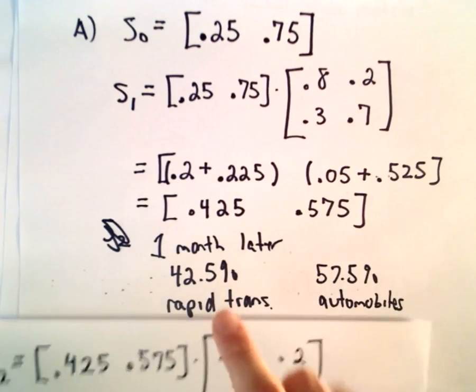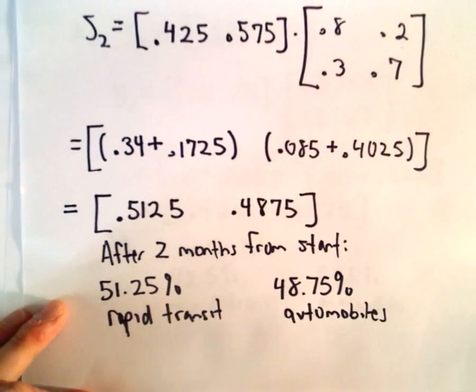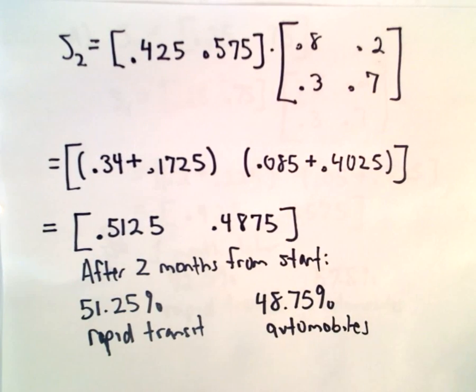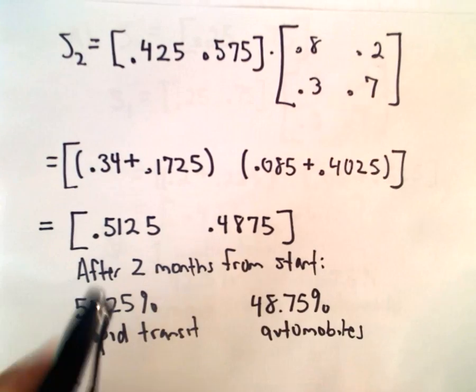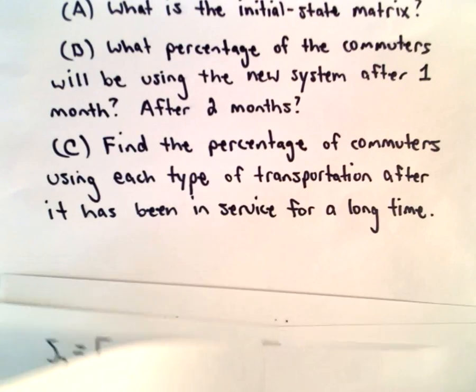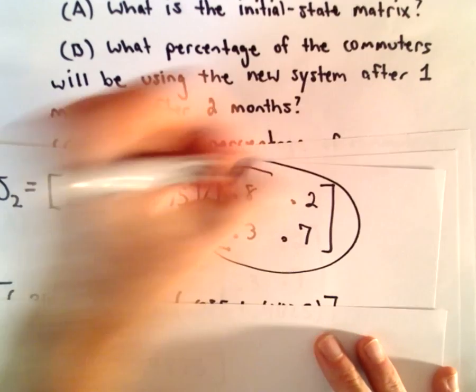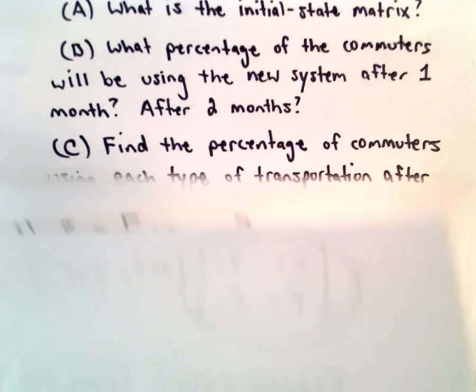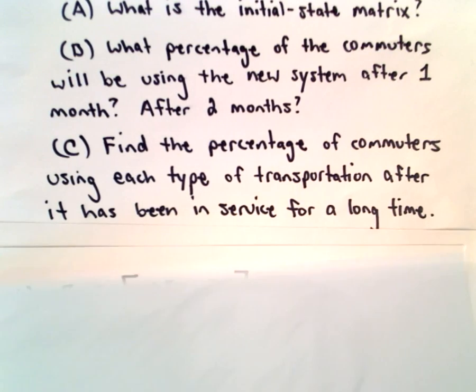It looks like quite a jump. We started with 25% on rapid transit, one month later it was up to 42.5%, and now we're up to 51.25%. So you could just keep calculating states, S of 3, S of 4, S of 5, S of 6, and look for that limiting matrix. Or what we're going to do is find our stationary matrix. We know this has a stationary matrix because our transition matrix is regular.